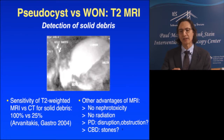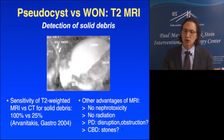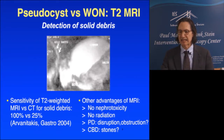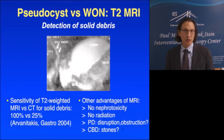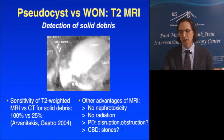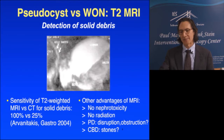On T2-weighted MRI images you can very nicely see the distinction between liquid and solid material. In one study, sensitivity on T2-weighted MRI was 100% compared to 25% for contrast-enhanced CT. MRI has other advantages: no nephrotoxicity since no contrast is used, no radiation, visualization of the pancreatic duct via MRCP showing disruption or obstruction, and we also see the CBD and gallbladder to look for stones that may be the etiology of the pancreatitis.